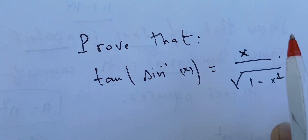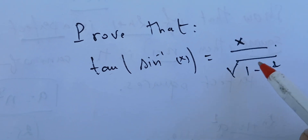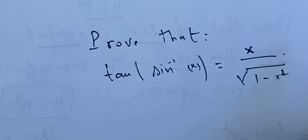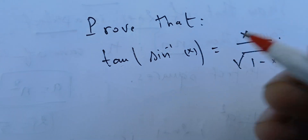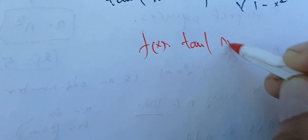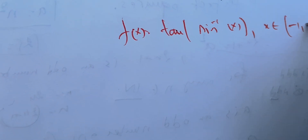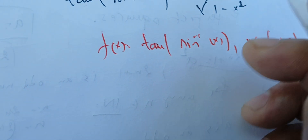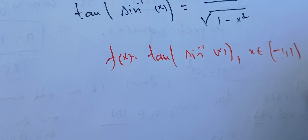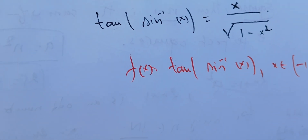In this video we're going to prove that the tangent of the arc sine of x is x over the square root of 1 minus x squared. If we call f(x) = tan(arcsin(x)), this is defined when x is in (−1, 1), not including 1 and −1, because tangent is not defined on π/2 and −π/2.